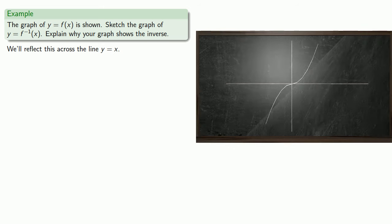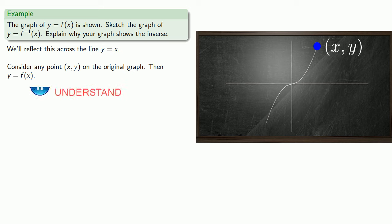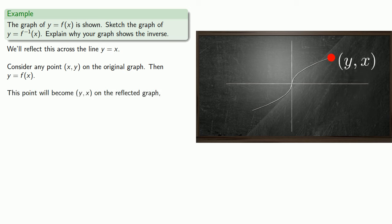So now why does the reflected graph show the inverse? Let's take a look at that reflection again. Now consider any point (x,y) on the original graph. Then y equals f of x. This point becomes (y,x) on the reflected graph. And what I'd like to do is express our output, which is x in this case, in terms of our input, which is y in this case. So in this case, we have x equals g of y, where g is some function.